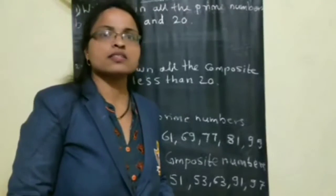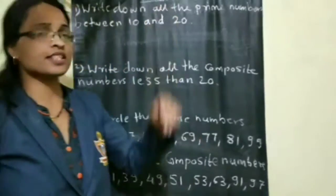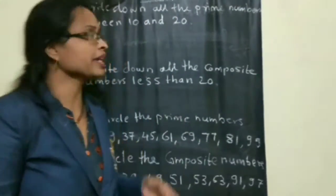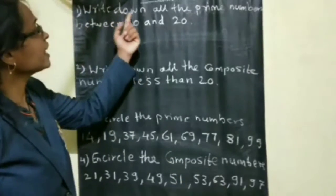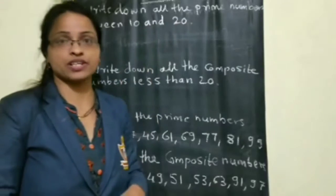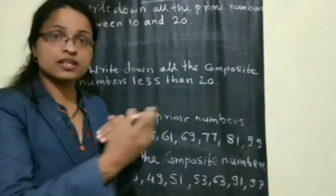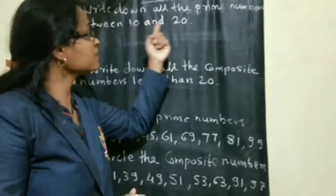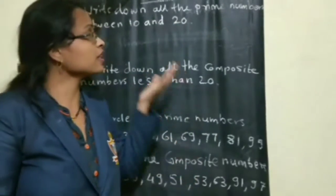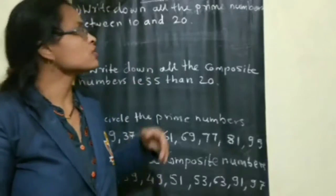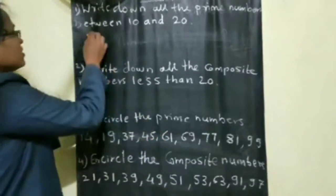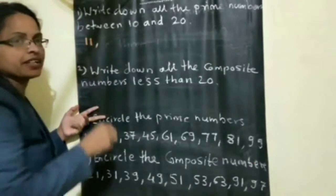Let us solve some exercise 8C problems based on these different types of numbers. First question: write down all the prime numbers between 10 and 20. Between 10 and 20 means don't include 10 and 20 themselves. We have to see which prime numbers come in between. 11 is a prime number — yes — because it has only two factors.